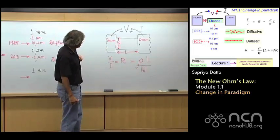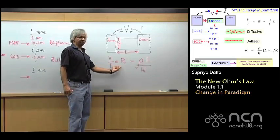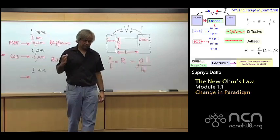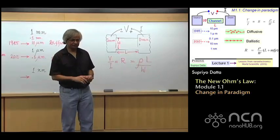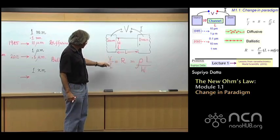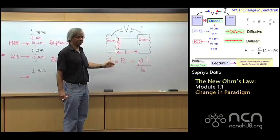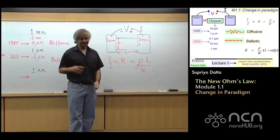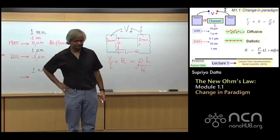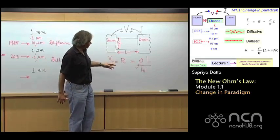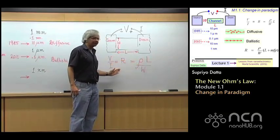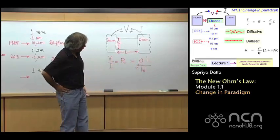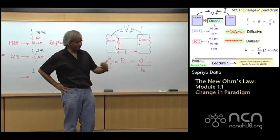When you say Ohm's Law, yes, sometimes people use it to denote the first part, namely, that resistance is voltage divided by current. Now, that part hasn't changed, in the sense that for small voltages, current is still proportional to voltage, and that's what you'd call resistance. So, when I said the new Ohm's Law, what I really mean is the second part of it. This idea that resistance is proportional to the length of a channel, because that is what you'd learn in freshman physics. That is what usually people carry in their heads.